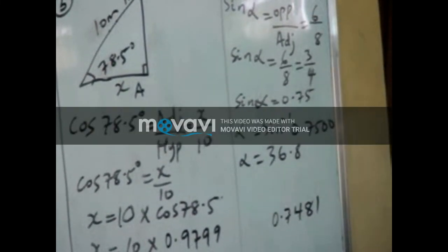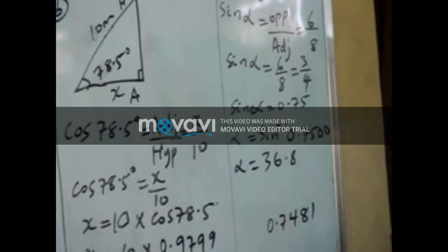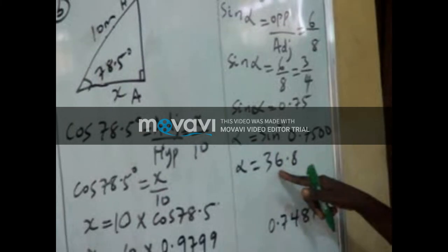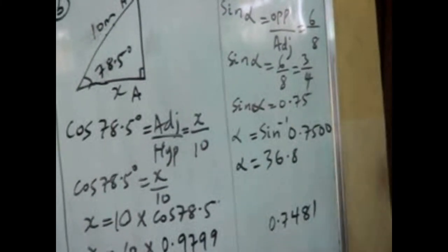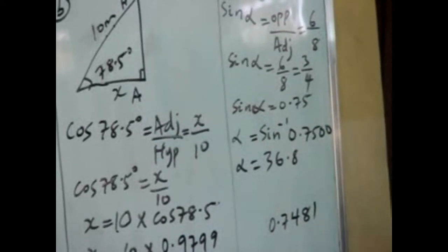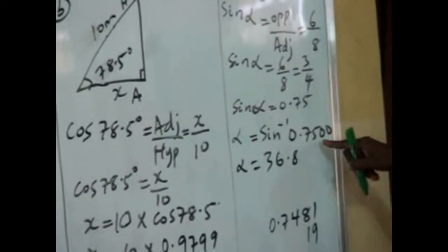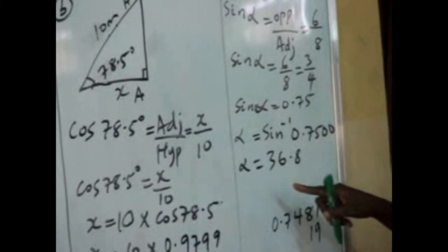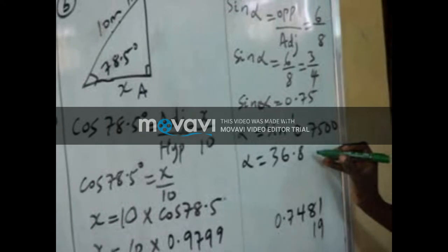When you check that 36 under 8, you will get the value 0.7481 and we are looking for 0.7500. What remains? It remains 19.